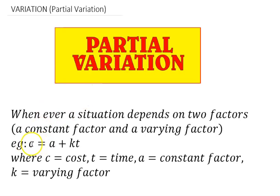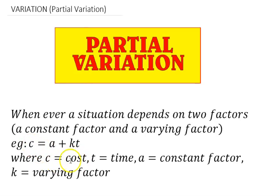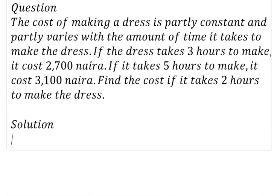This example on screen shows the form that our partial variation equation will look like, because we'll be dealing with a constant factor and a varying factor. The constant factor is 'a' and the varying factor is 'k'. So once your situation depends on two factors, this is how you go about it. Let's now dive into solving the question.